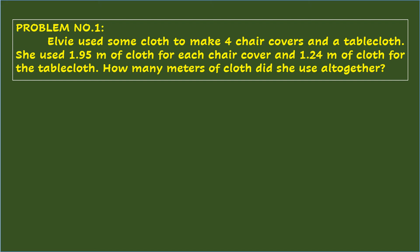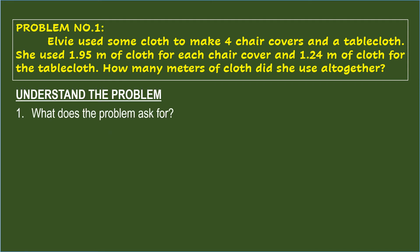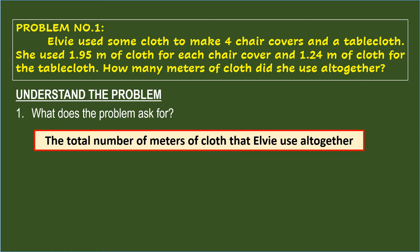When solving a multi-step word problem, the first thing to do is to understand the problem. You should be able to answer the question: What does the problem ask for? You need to look for the question directly stated in the problem, which is: How many meters of cloth did she use altogether? So the problem is asking for the total number of meters of cloth that Elby used altogether.